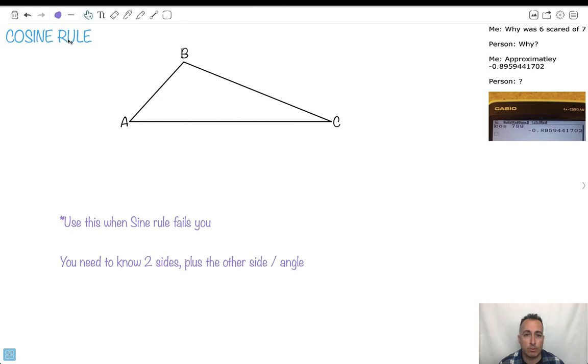I'm going to be showing you the cosine rule, which is what you should use when the sine rule fails you. So this is all in the interest of trying to solve triangles and trying to figure out sides or angles.